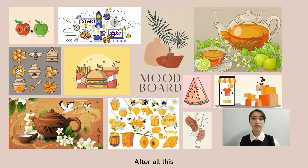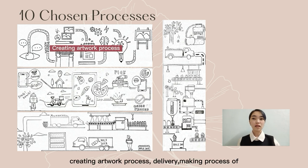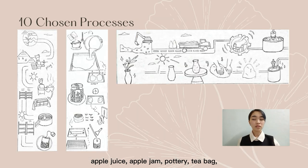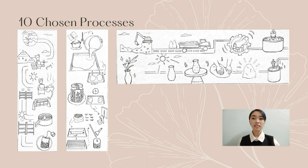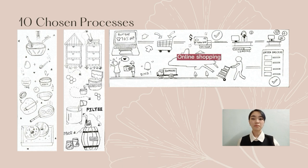After all this research process, the 10 chosen processes are: creating artwork process, food delivery, making process of apple juice, apple jam, poultry, tea bag, sticky candy, donut, the process of collecting honey, and online shopping.